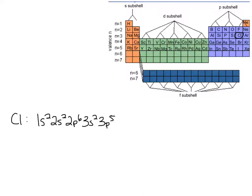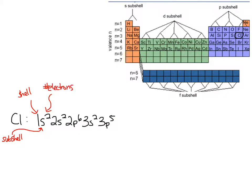It's important to remember what these numbers mean. The number in front tells me the shell that I'm in — you might see the word electron shell, energy level, or principle energy level, and they all mean the same thing. The letter tells me what subshell I'm in: S, P, D, or F. The exponent is telling me how many electrons are in that particular subshell. So if I see 1s2, it's telling me there are two electrons in the S subshell of the first energy level.